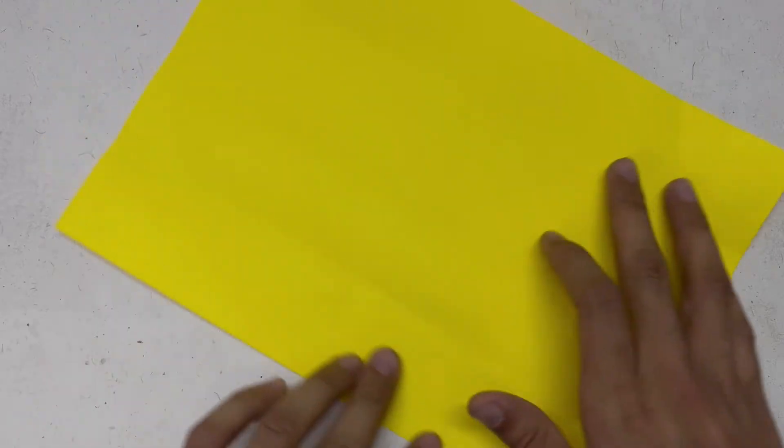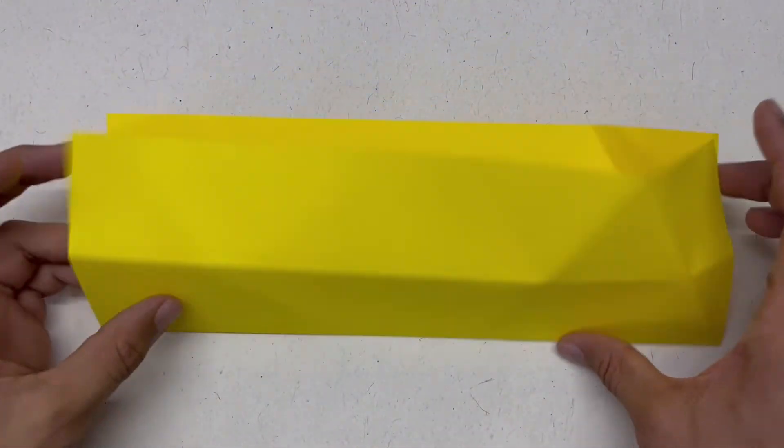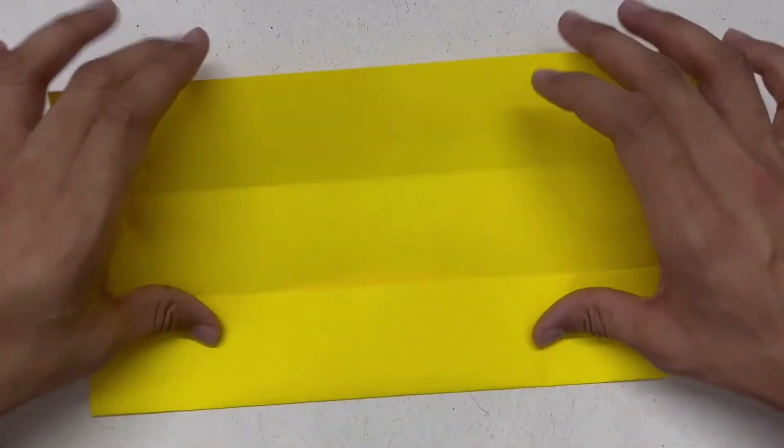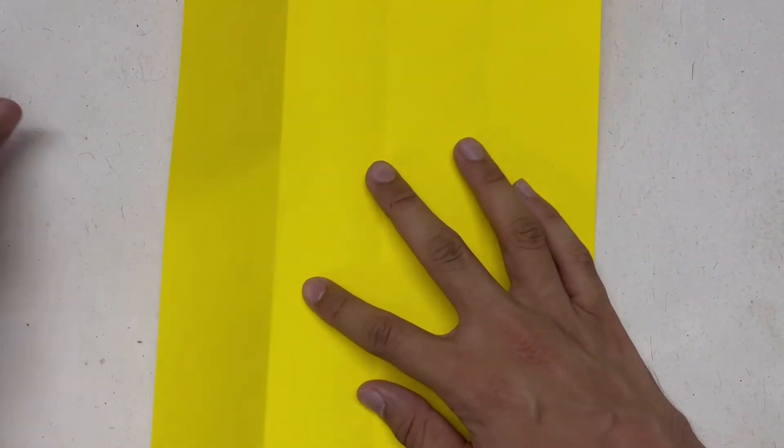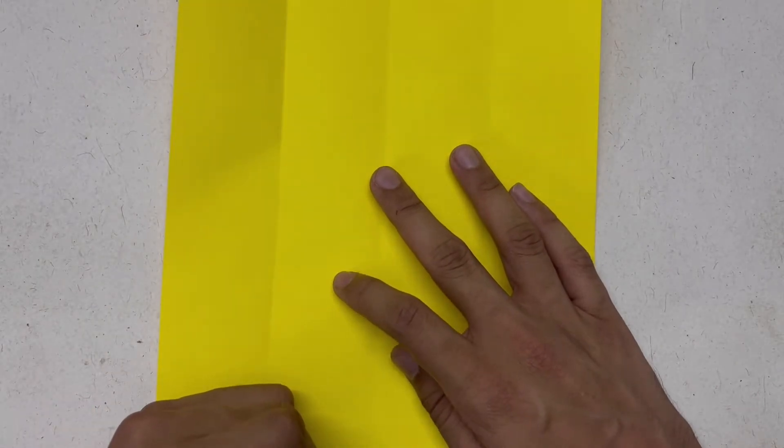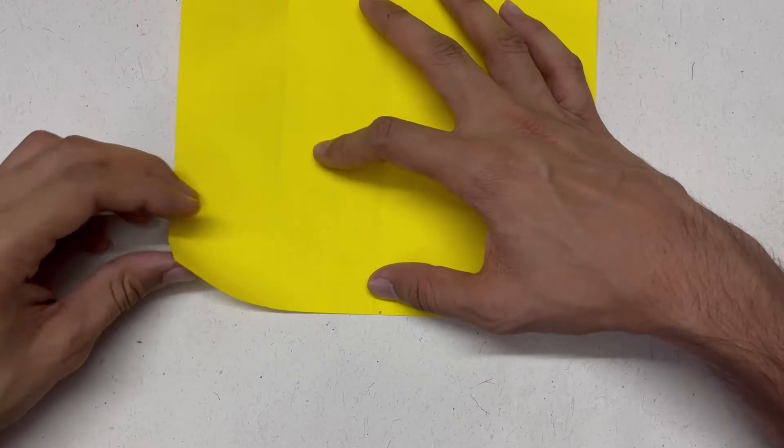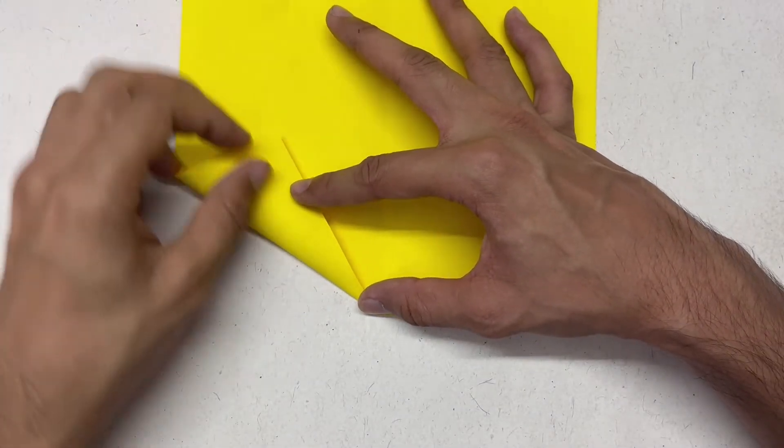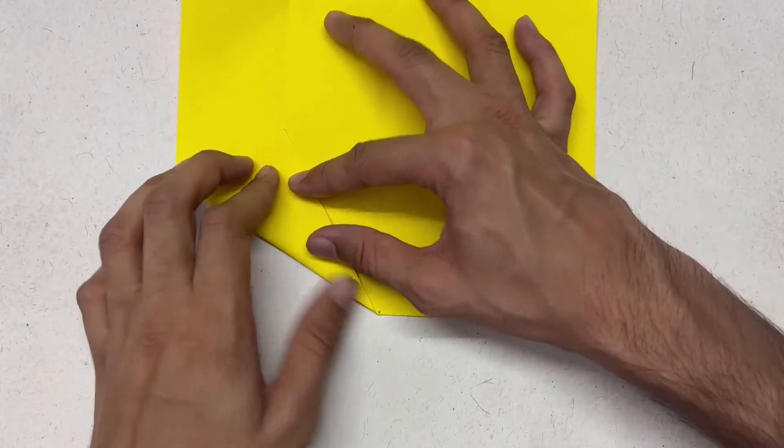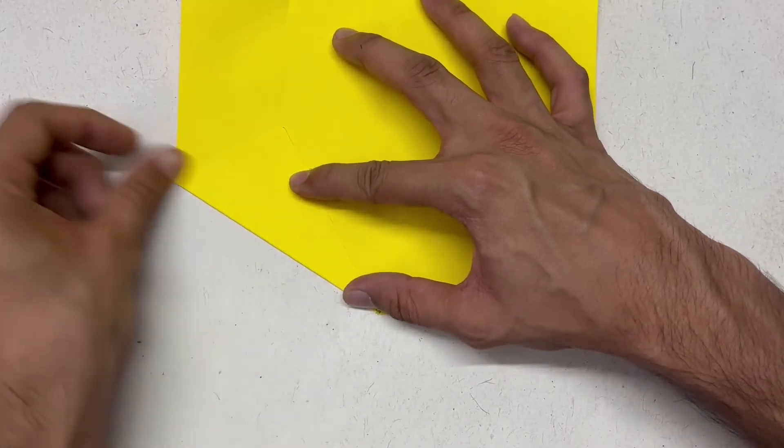Let's begin folding. First divide the paper in half and one fourth like this. Then use this point as a reference point and fold the paper such that this vertex touches this line, and the other end should stop over here. Do the same over here.